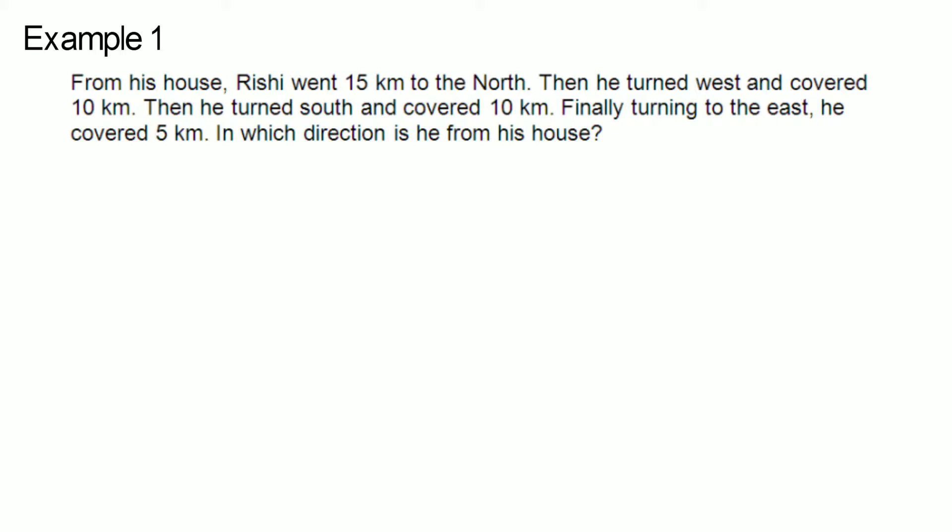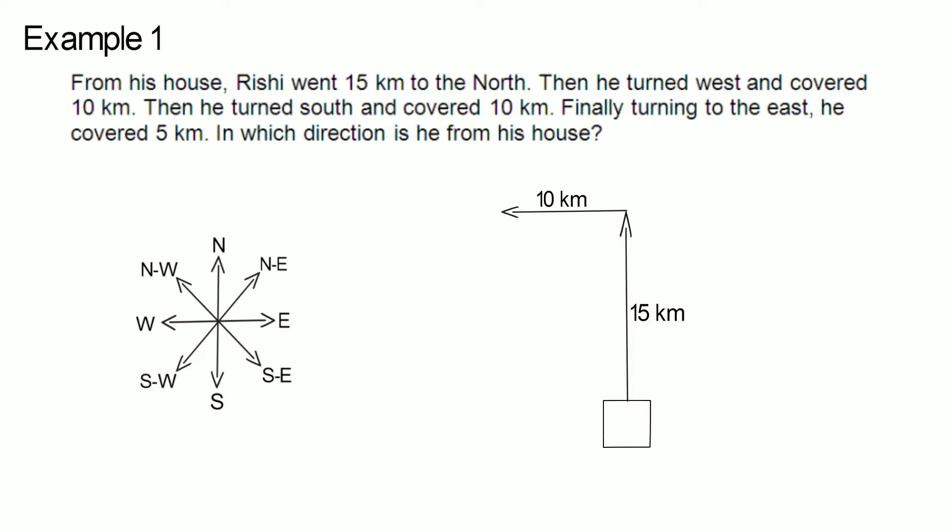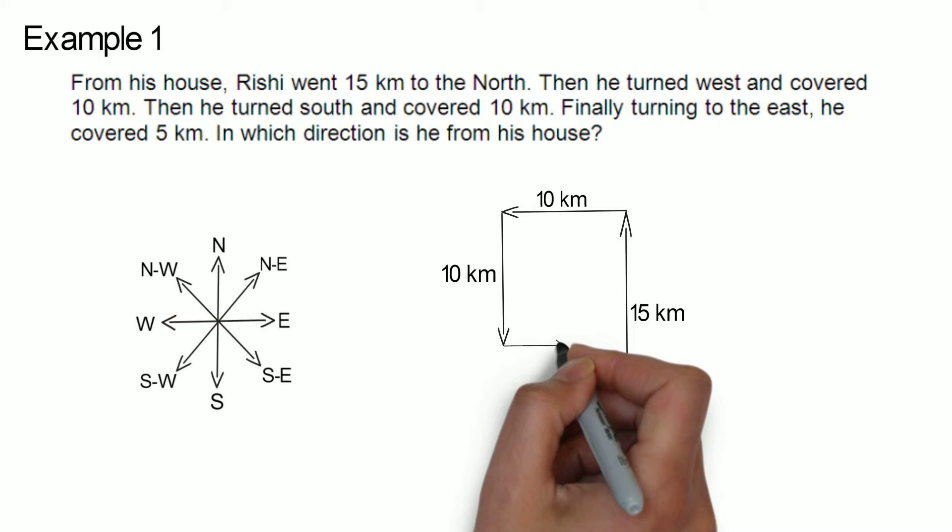This is our direction chart. Rishi started at home and went north for 15 kilometers. He then turned west and traveled for 10 kilometers. He then turned south for another 10 kilometers and finally turned east and traveled 5 kilometers.